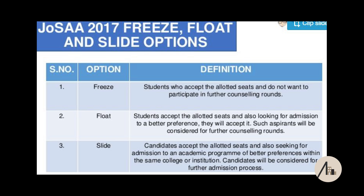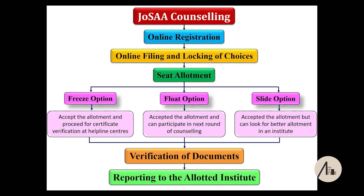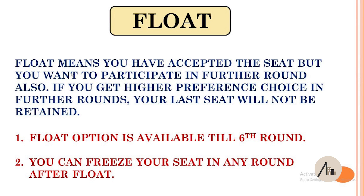There are three terms you should understand: freeze, float, and slide. At the time of counselling, if you get a college you have three options. Freeze means you accept the college and don't want to go for further counselling — you are satisfied and are taking that college. Float means you got a college but you want to wait to see if you can get a better college according to your preference list.